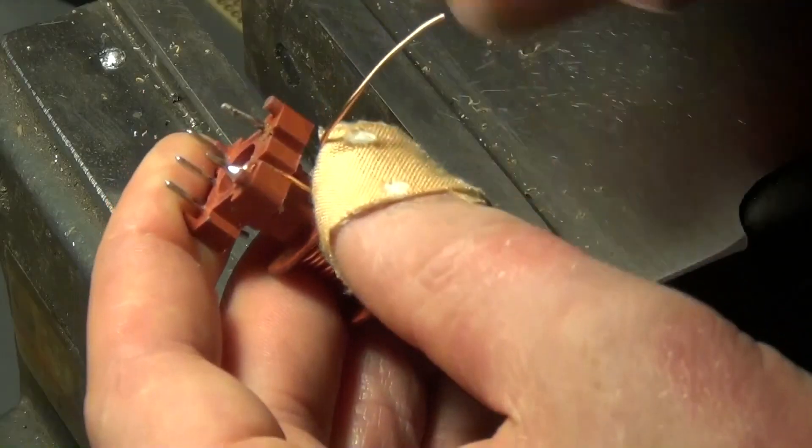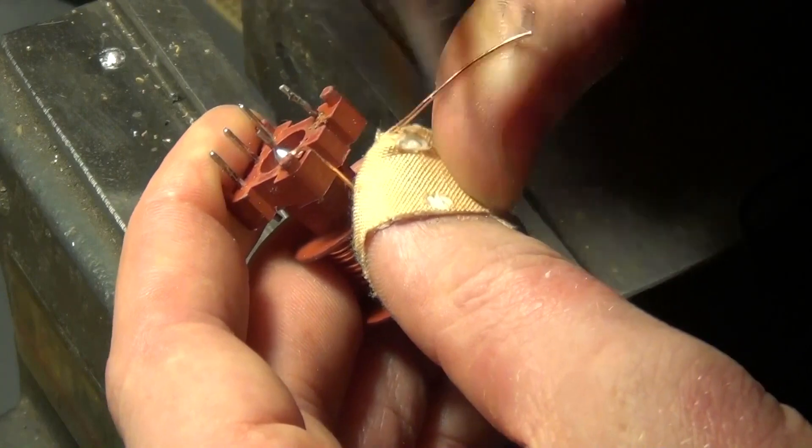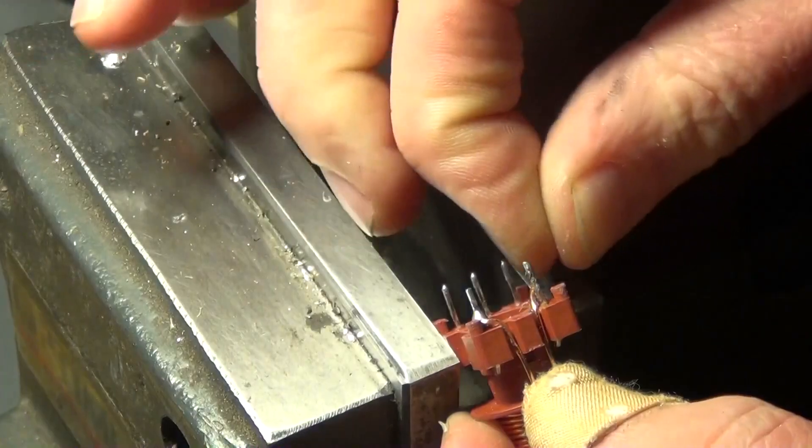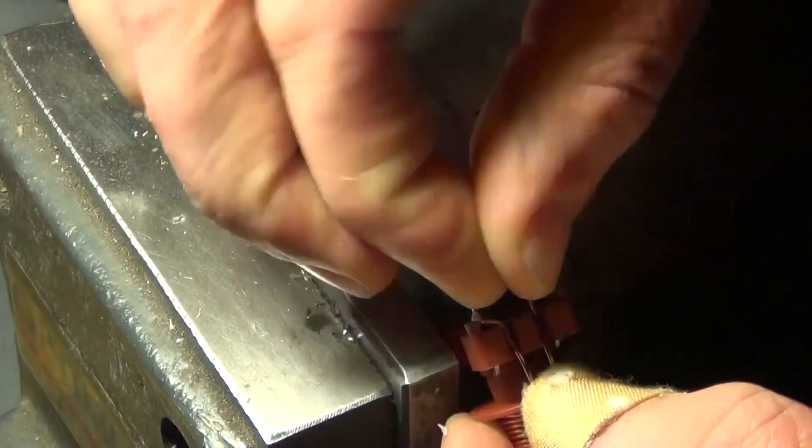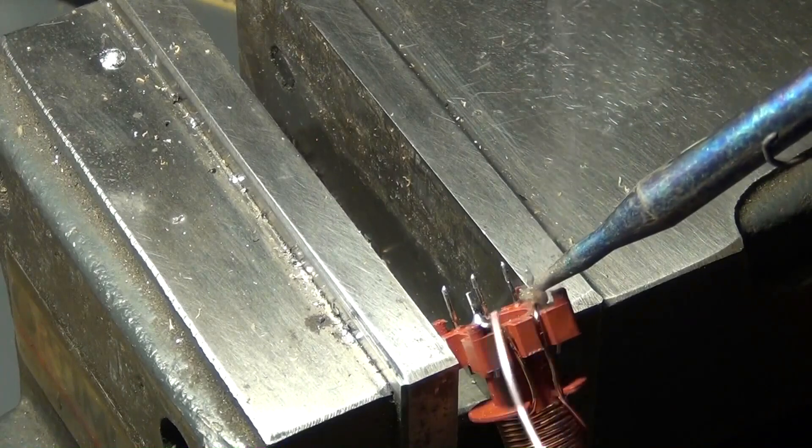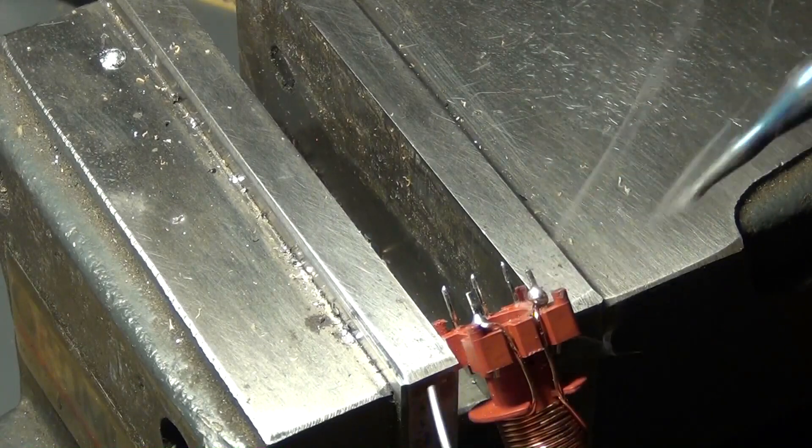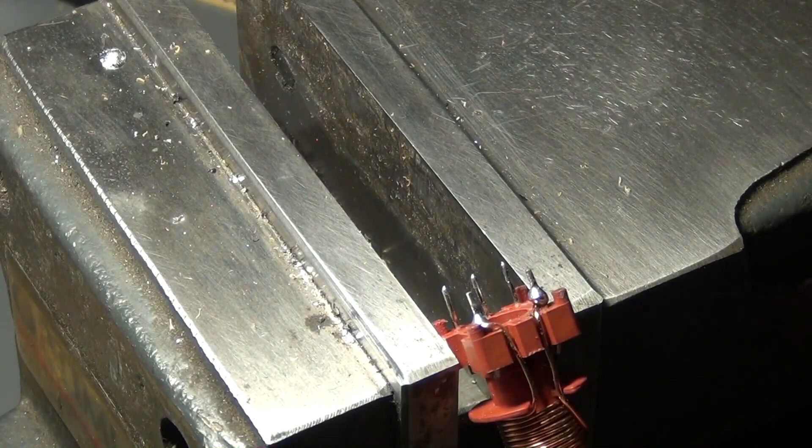After that, the other end of the magnet wire is again freed from the varnish and fastened around one of the three pins. Then the two ends of the magnet wire are soldered onto these pins. The primary winding is now finished.